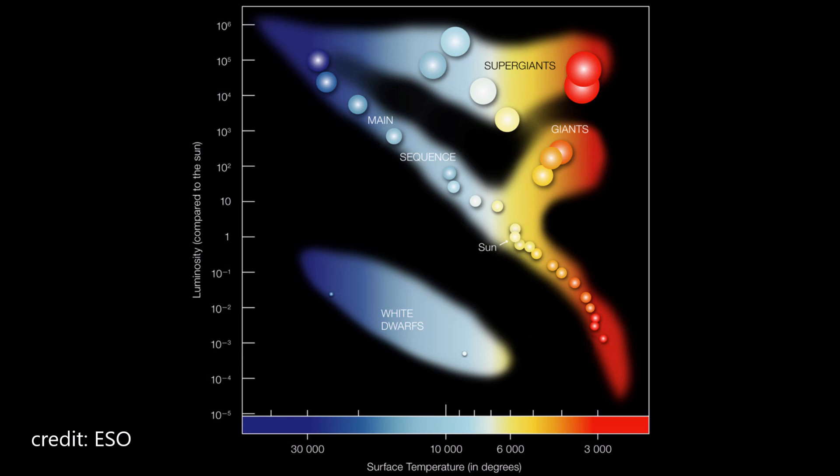The HR diagram also provides information about the distribution of different types of stars in the galaxy, which can be used to study the formation and evolution of galaxies.